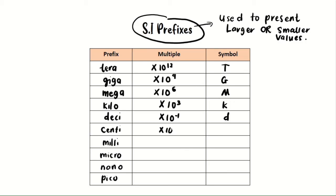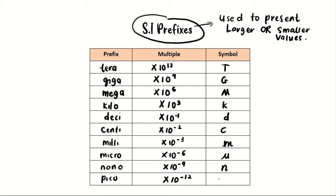Deci is 10 to the power of negative 1, symbol lowercase d. Centi is 10 to the power of negative 2, symbol lowercase c. Milli is 10 to the power of negative 3, symbol lowercase m. Micro is 10 to the power of negative 6, symbol mu. Nano is 10 to the negative 9, symbol n. And pico is 10 to the negative 12, symbol lowercase p.